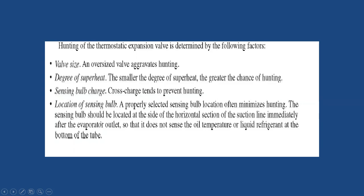To prevent hunting: use a properly sized valve; maintain a slightly higher degree of superheat; use cross charge; and locate the sensing bulb at the side of the horizontal suction line. These factors, when properly controlled, can prevent hunting effectively.